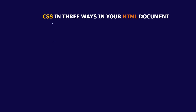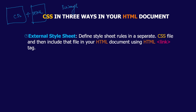CSS can be added to your HTML document in three ways. Whenever you are going to link your CSS page with your HTML page, it can be done in three ways. The first way is the external style sheet — you define a style sheet in a separate CSS file.